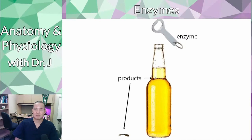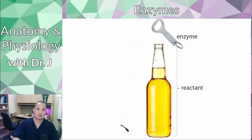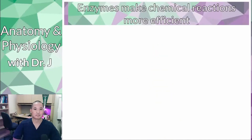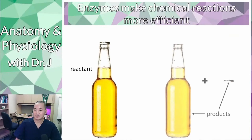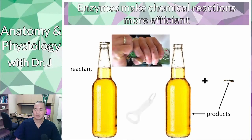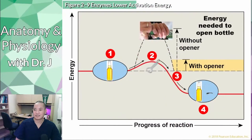You still have the same initial reactant and still end up with the same products, but you spend less energy than when doing the reaction without an enzyme. Enzymes are special proteins — most of the time — that make chemical reactions more efficient. With the same reactant and same products, two different ways: the one without the enzyme requires more energy, and the one with the enzyme requires less energy.